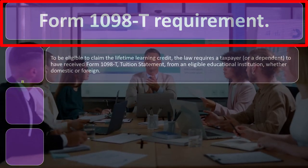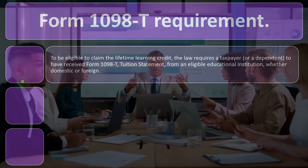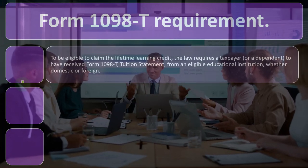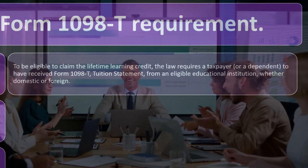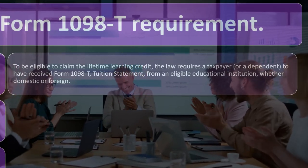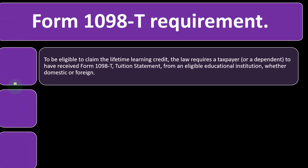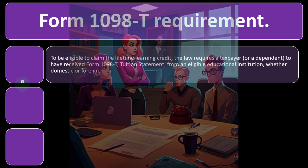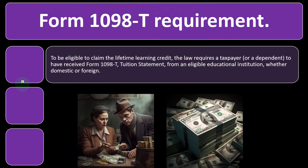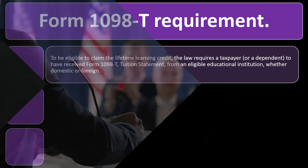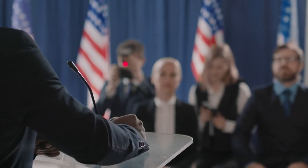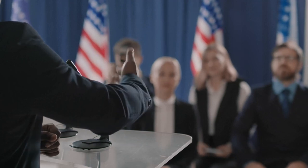Form 1098-T requirement: To be eligible to claim the Lifetime Learning Credit, the law requires a taxpayer or a dependent to have received Form 1098-T, a tuition statement from an eligible educational institution, whether domestic or foreign. If you don't receive one, contact the institution to get it, as they generally send one to the government as well. You want to be sure you're in compliance with what's reported on the 1098-T, though the amount reported might not necessarily coincide with actual expenses due to individual circumstances.